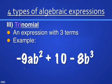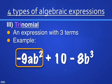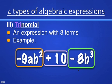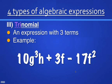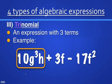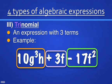How about negative 9ab squared plus 10 minus 8b to the third? Where are we separating by addition or subtraction? Our first separation by addition gives us the first term: negative 9ab squared. The next separation by subtraction gives us the second term: positive 10. And the third term is negative 8b to the third. In one more example: 8g to the third h plus 3f minus 17f squared — the first term is 8g to the third h, the second term is plus 3f, and the third term is negative 17f squared.